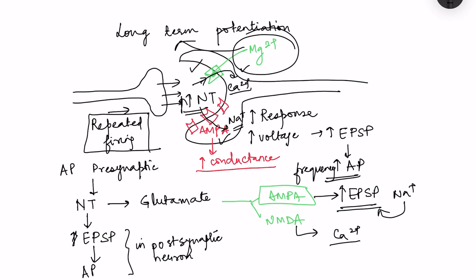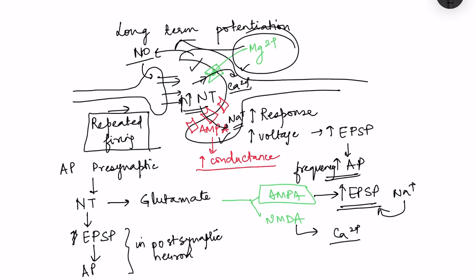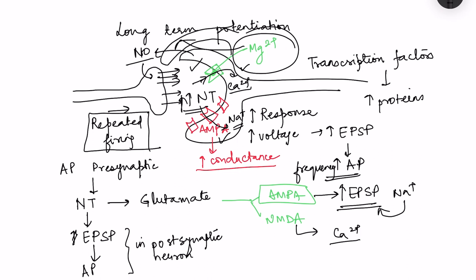There are other mechanisms as well. One is the release of a gas — nitric oxide — from the post-synaptic neuron. This gas causes changes in the pre-synaptic neuron such that with each action potential there will also be increased release of neurotransmitter. Third, there is phosphorylation of transcription factors, which causes changes at the genetic level, increasing the synthesis of proteins and leading to formation of more synaptic connections.